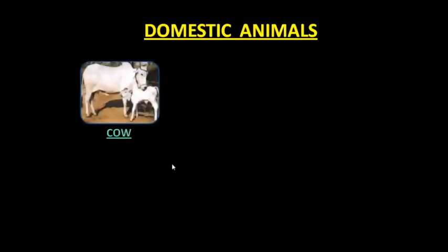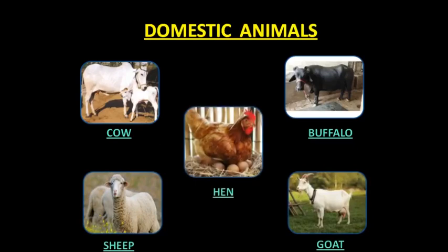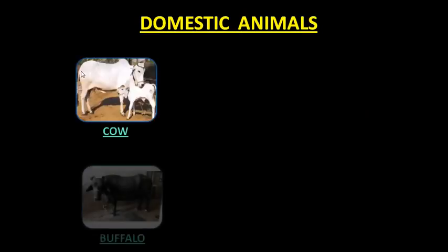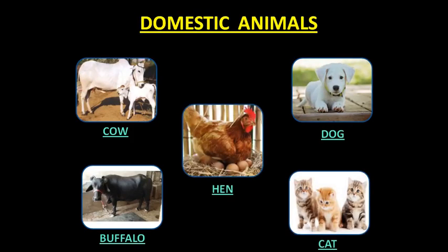Let us meet some of our domestic animals. Some of our domestic animals are cow, buffalo, sheep, goat, hen, dog, and cat. Domestic animals like cow, buffalo, dog, cat, hen are kept as pets. We keep these animals as our pets — they are very friendly to us and they also make us feel happy. Domestic animals are also kept as pets.